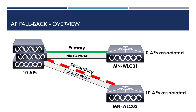Maybe this isn't how we want it to work. Maybe we want our APs to fail back to our primary controller if it comes back online. Thankfully, Cisco Wireless Controllers have the option to enable automatic fallback to our primary controller. This is known as AP fallback.